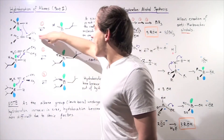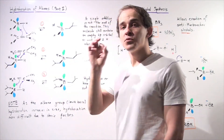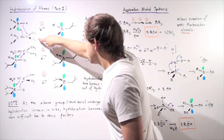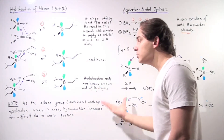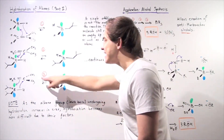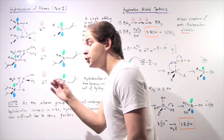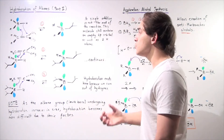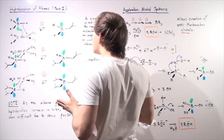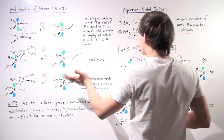Note this important point: as the alkene used in these steps — the Lewis base undergoing hydroboration — increases in size, hydroboration becomes more difficult due to steric factors, due to steric hindrance. So the larger the alkene becomes, the less likely our hydroboration reaction will take place three times.